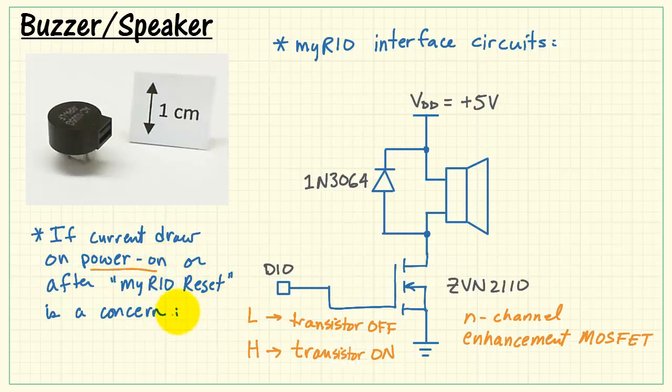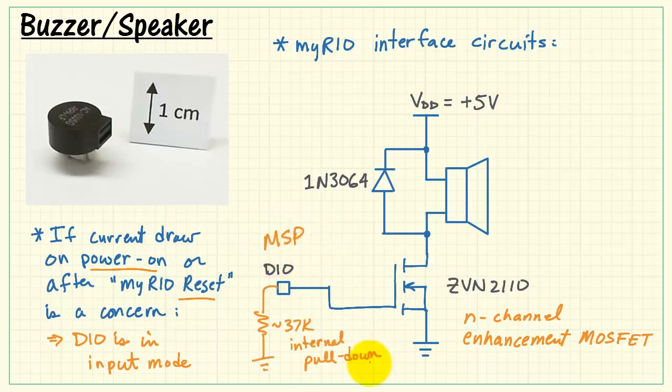Now here's a consideration if current draw, either after a power-on or after a software reset is a concern, to recognize that the DIO now becomes an input. And on the MSP side, that is connector C, we would have an internal pull-down resistor of somewhere between 37k and 40k. And this pull-down resistor will guarantee that the transistor is off. In this case there's no current draw through the speaker.